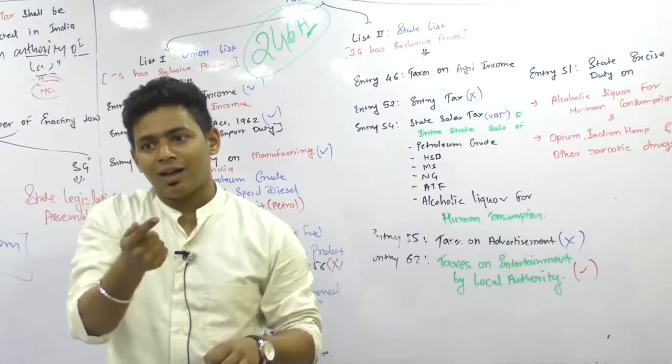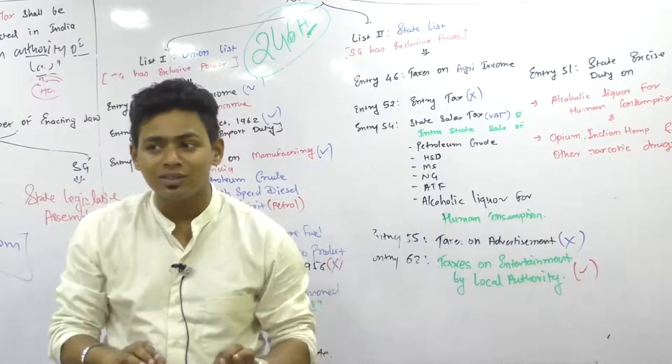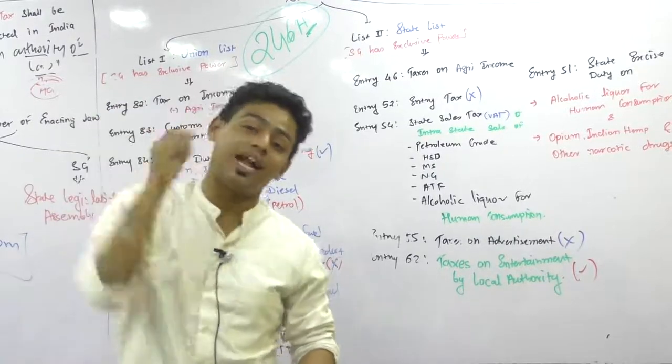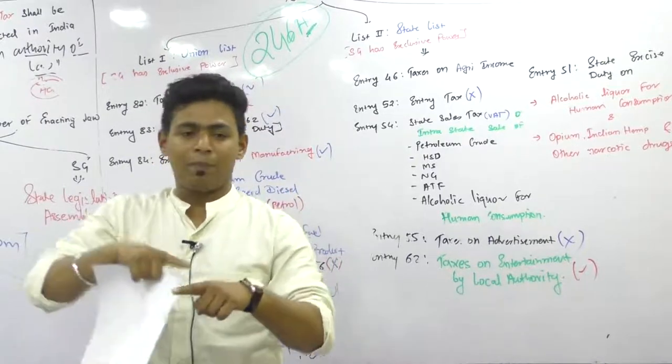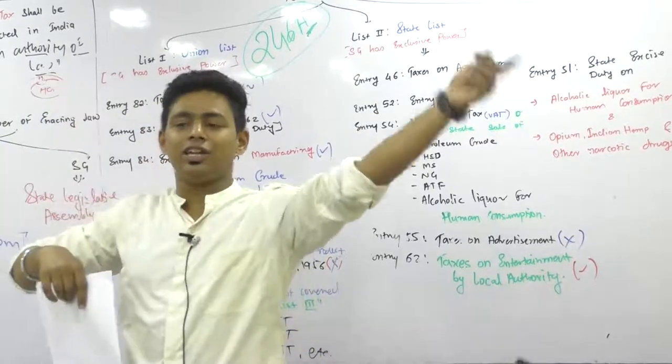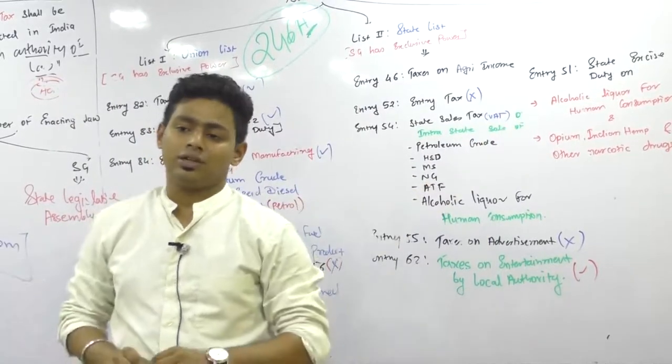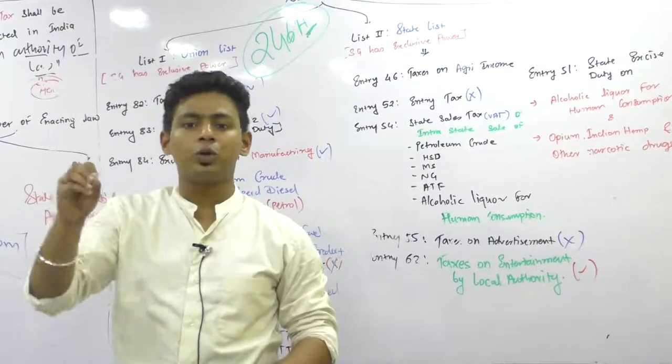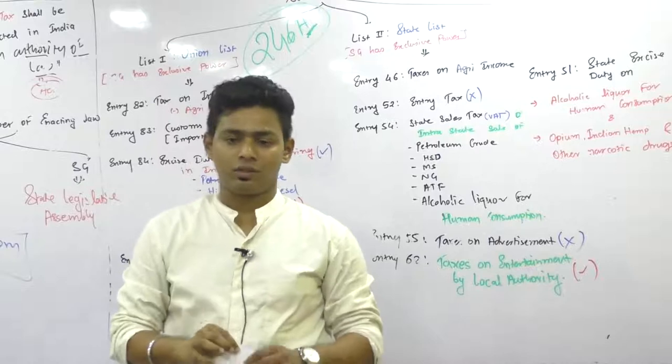But the moment they show data in the GST portal, that means they are earning that much. And now they have to pay income tax on at least the income that they had shown in GST. Because GST is linked with PAN, PAN is linked with Aadhaar, income tax return is linked with PAN, GST return is linked with GST number. Everything is online.